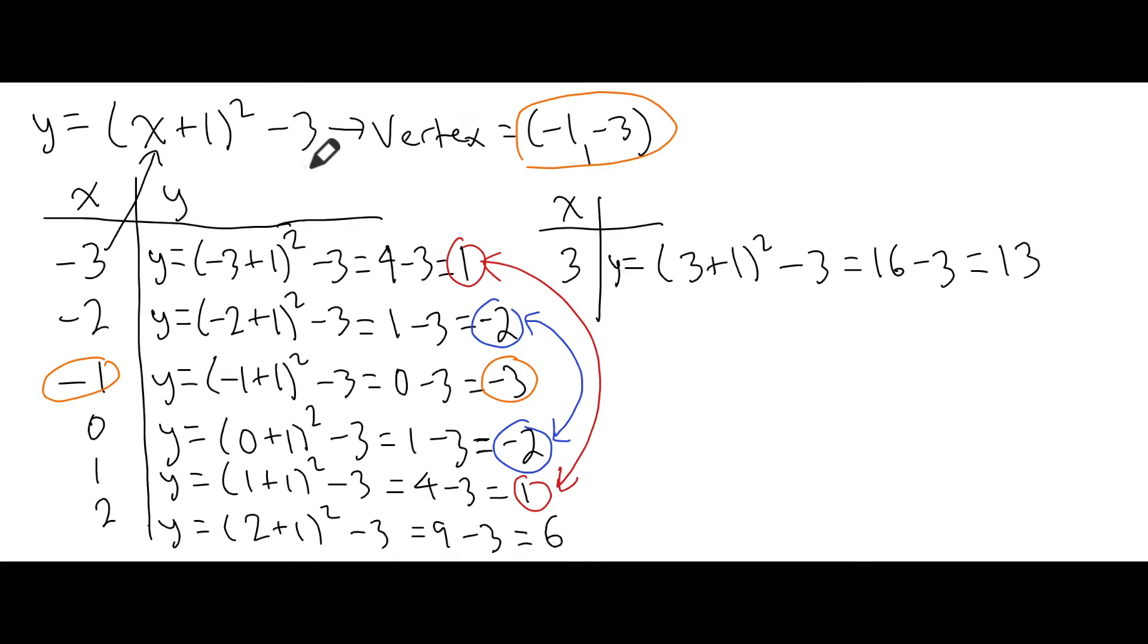So if we want to graph this quadratic relation, all we need to do is plot the x and y coordinates together. As an example, we would plot (-3, 1), then we plot (-2, -2), (-1, -3), and so on. We do this for all the coordinates that we have. I won't do this by hand, but I will show you how to do this using Desmos.